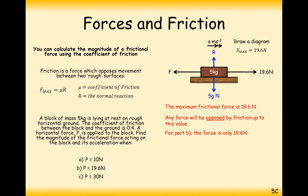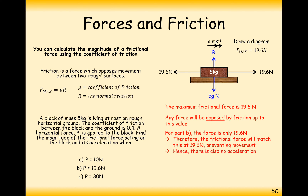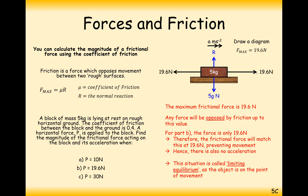When the applied force is exactly 19.6 newtons, we use the full maximum friction value to prevent movement, so the particle remains stationary. This situation is known as limiting equilibrium — the object is on the point of movement. If the force were increased slightly to 19.7 newtons, it would start to move.